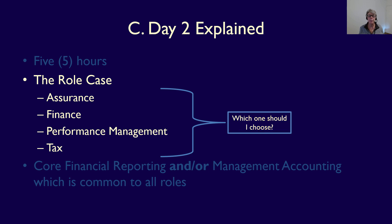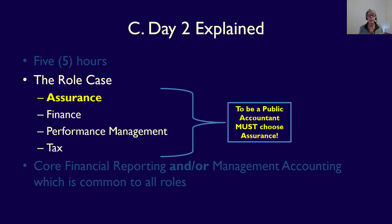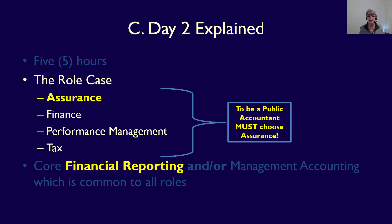Since there's no difference in pass rates between the four roles — and don't listen to anyone who says there is — which role should you choose? If you want to be licensed as a public accountant, you have to choose the assurance role on Day Two. Your competence in your role is assessed only on the Day Two issues given to you in that role. In addition, you must be competent in financial reporting over the combined Day Two and Day Three exams — your financial reporting competence is assessed over all issues on both days.